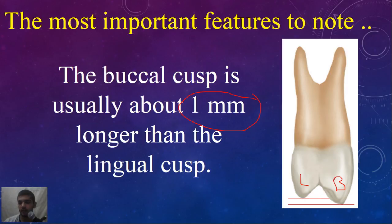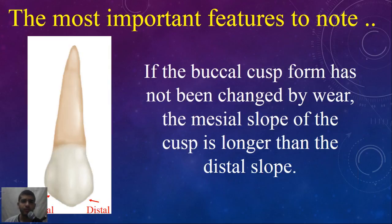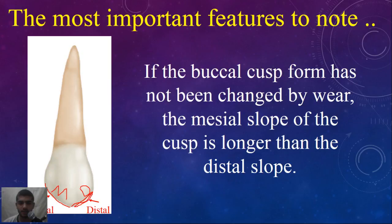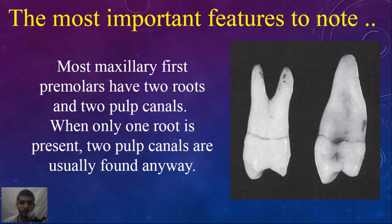We will talk about that in a separate video. The other important feature to note is that if the buccal cusp form has not been changed by wear, the mesial slope of the cusp is longer than the distal slope. So the mesial slope, if not changed by wear, is going to be longer than the distal slope.